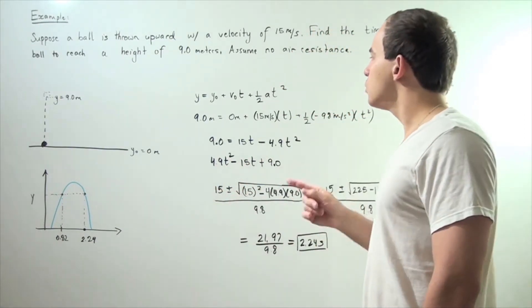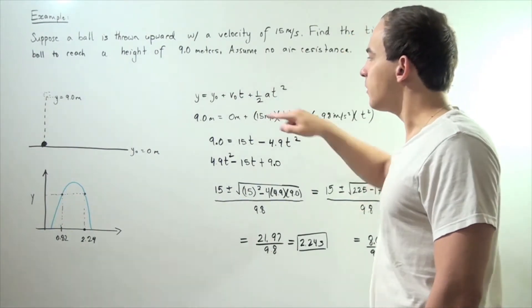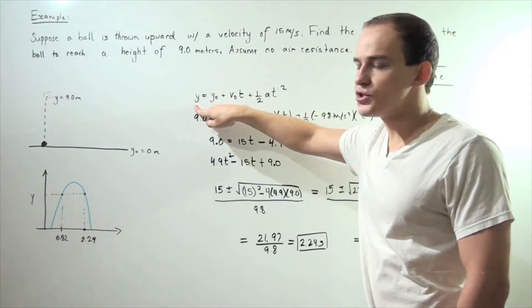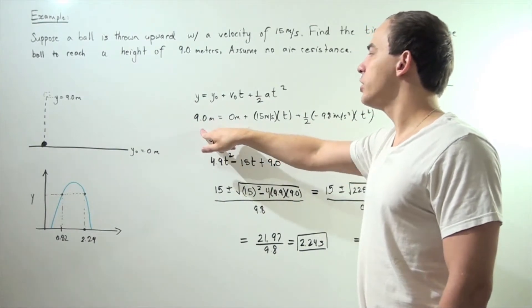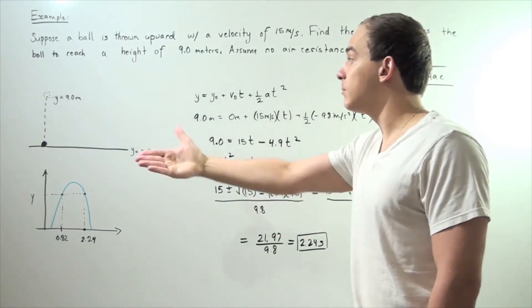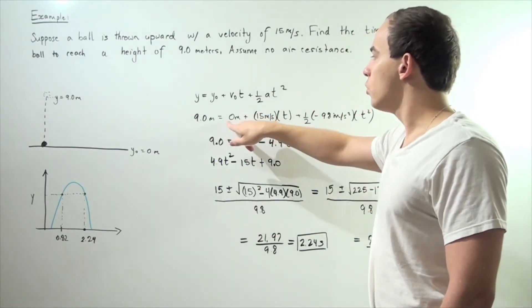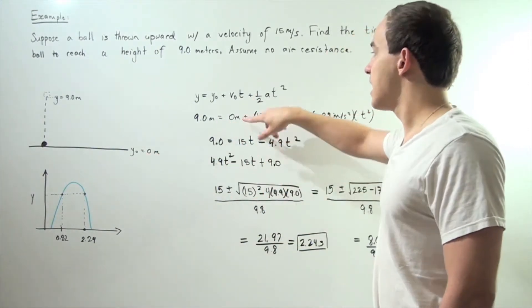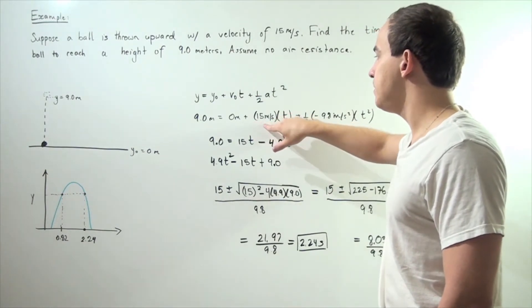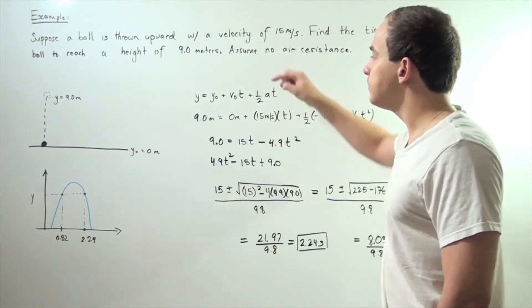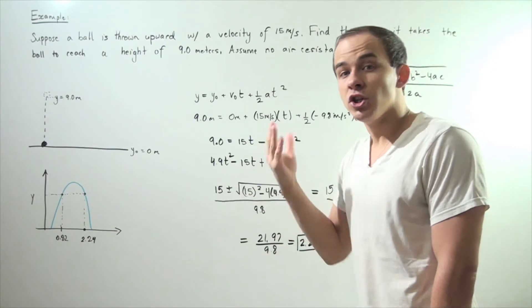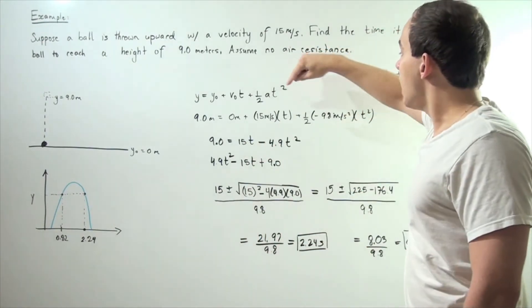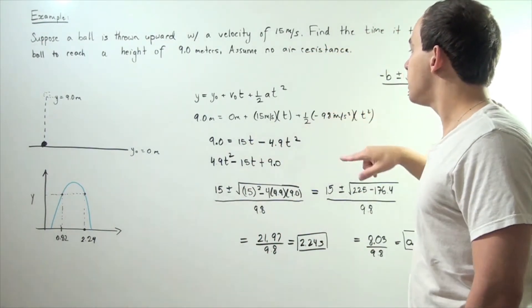We're going to use this equation. We know what our y is. The y is 9.0 meters, the final height the ball will reach, equals 0 meters the initial height at the ground, plus our initial velocity v-naught, 15 meters per second, multiplied by time - that's what we're looking for - plus one-half multiplied by...